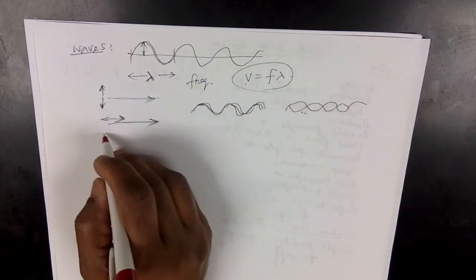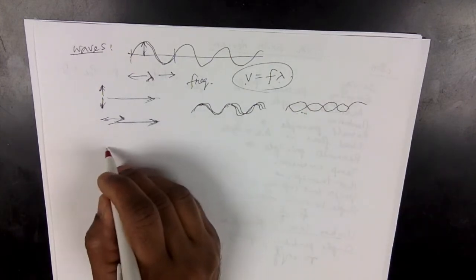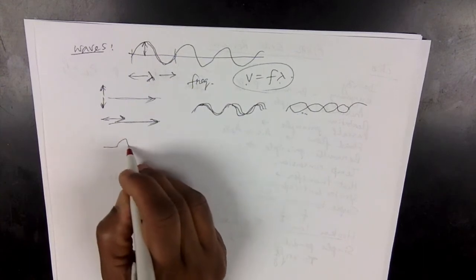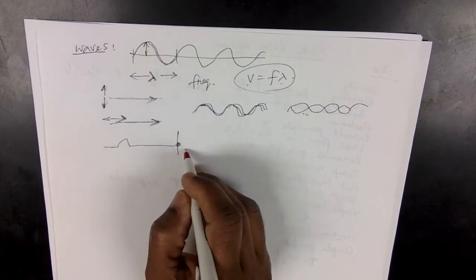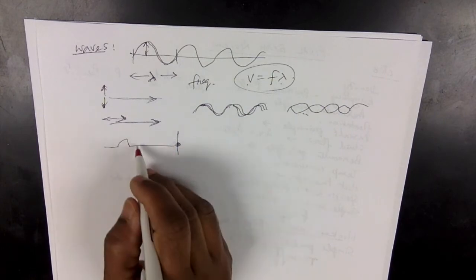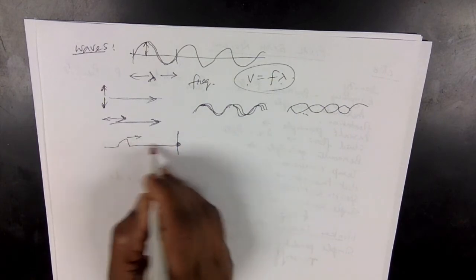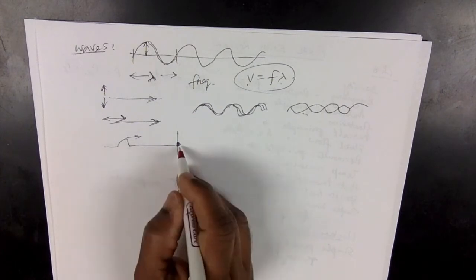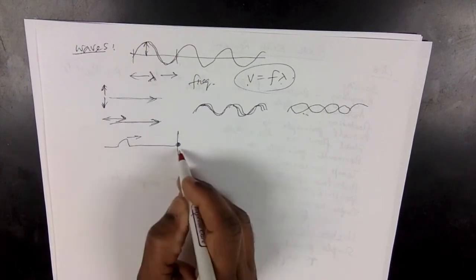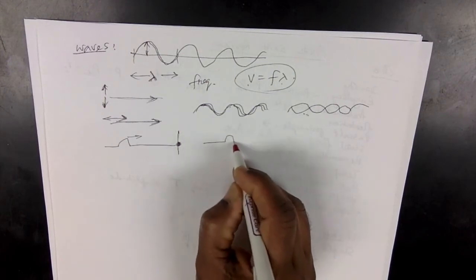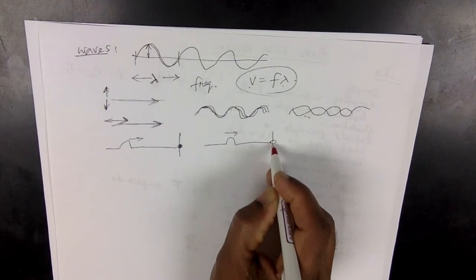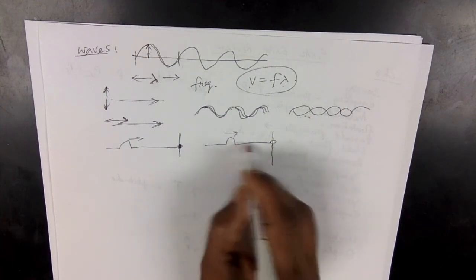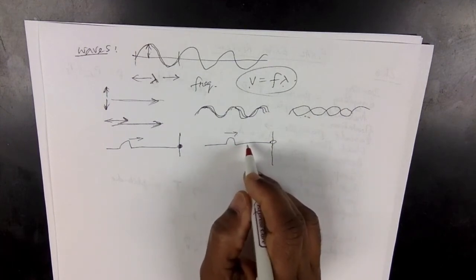Then reflection of waves. If you send a pulse to a fixed boundary, it gets reflected and also gets inverted — you can read that on page 388. Whereas when this pulse moves on to a free boundary, it gets reflected but won't be inverted.